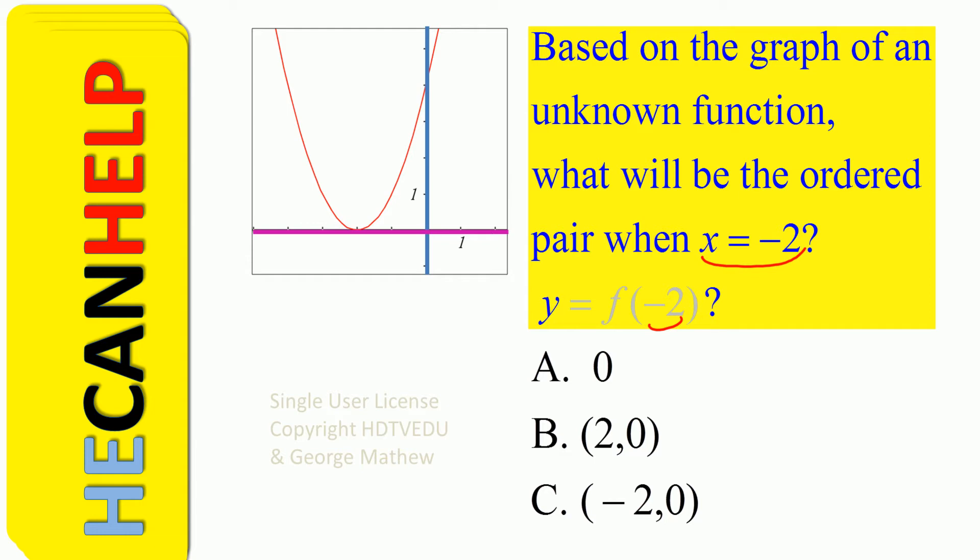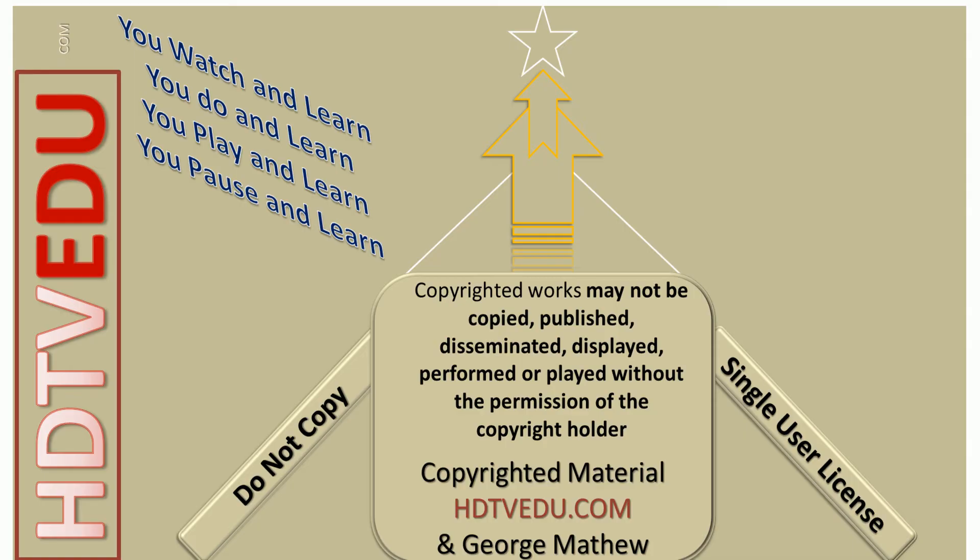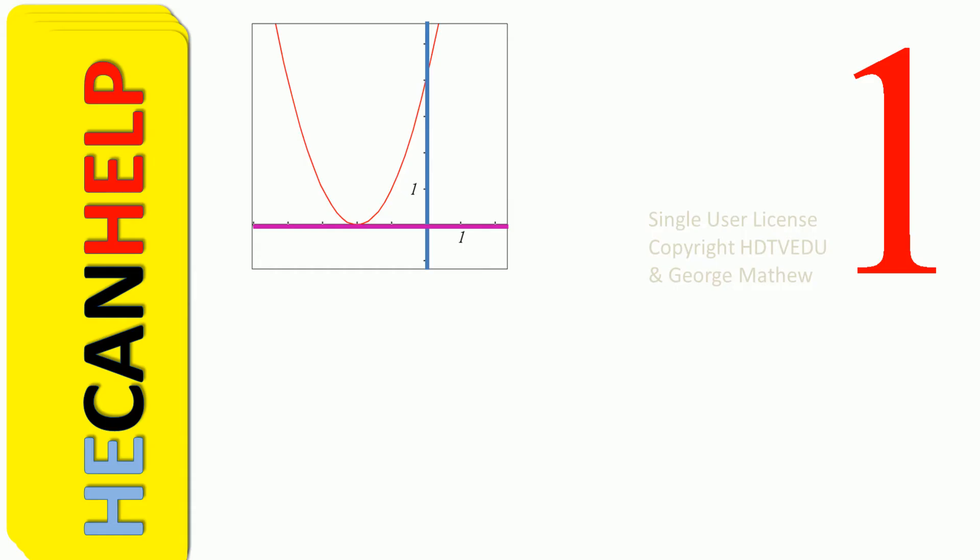Is it A, is it B, or is it C? Based on the graph, what is it that we see?